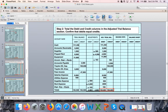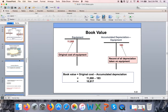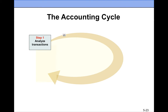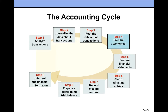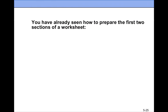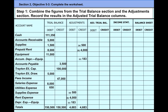So we're done with adjusting entries, and now we're ready to complete the worksheet. I want to remind you — we just completed the first four columns, and we still have six more money columns to complete. We've already done the trial balance and adjustments, and now we're going to complete the entire worksheet.